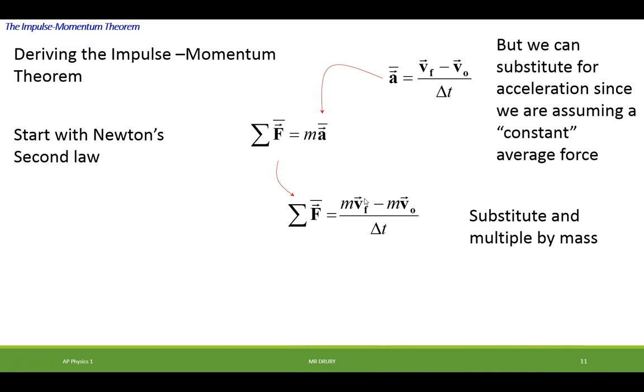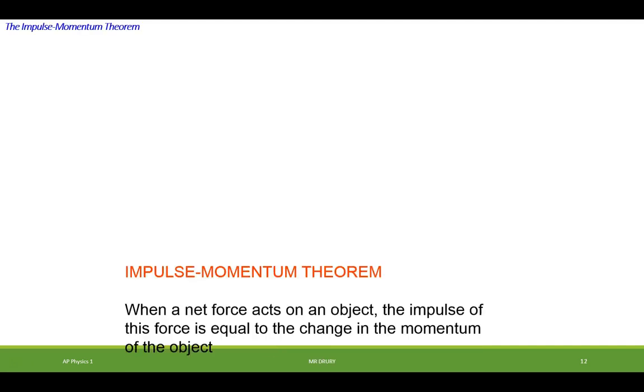Once I substitute and multiply it through by mass, I obtain this. And we're almost there. After doing a little bit of rearranging of terms, I end up with the impulse momentum theorem. Alright, I'll talk a little bit more about that now.